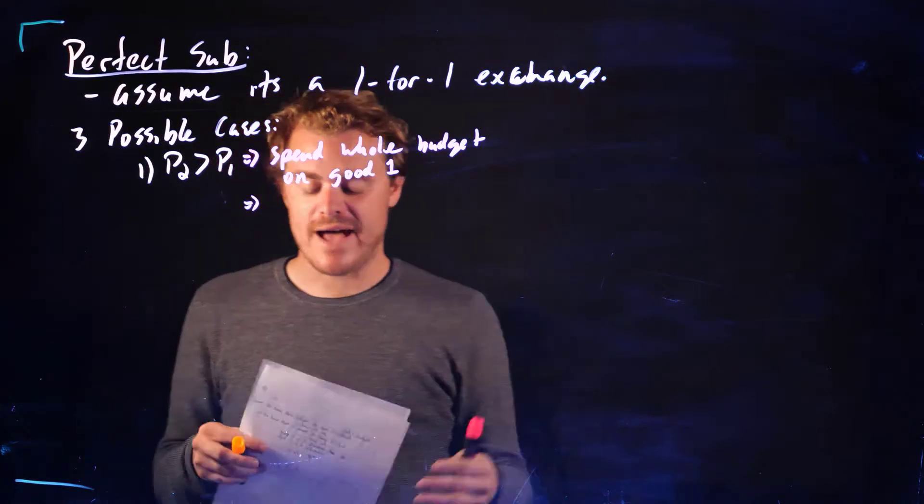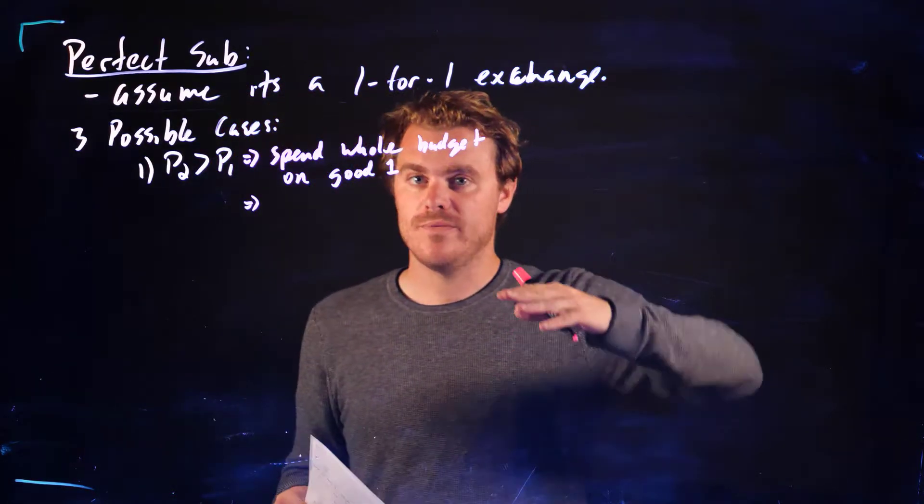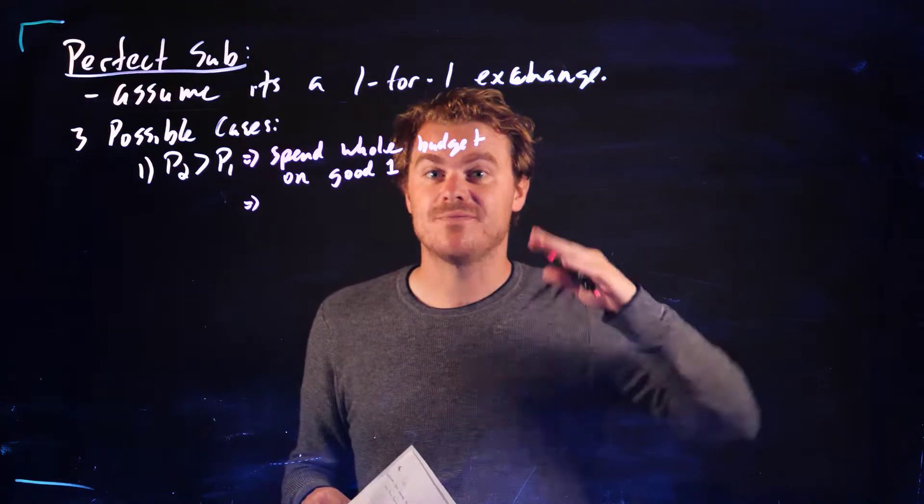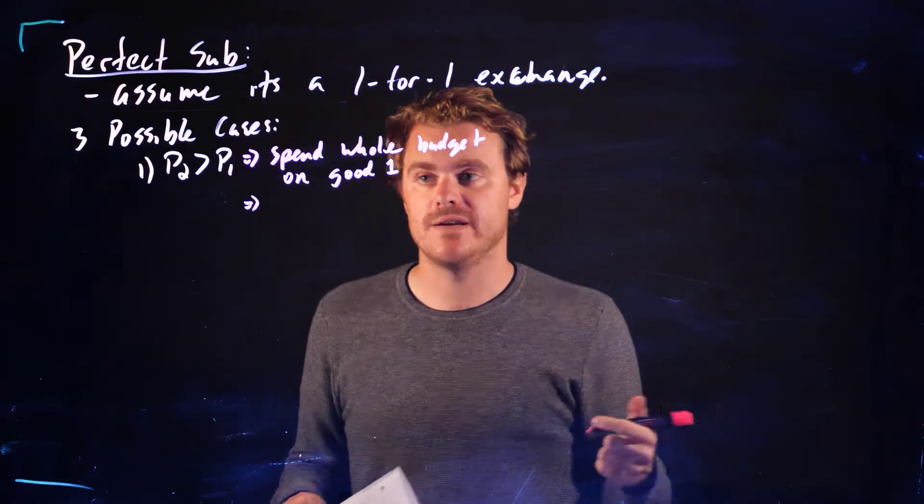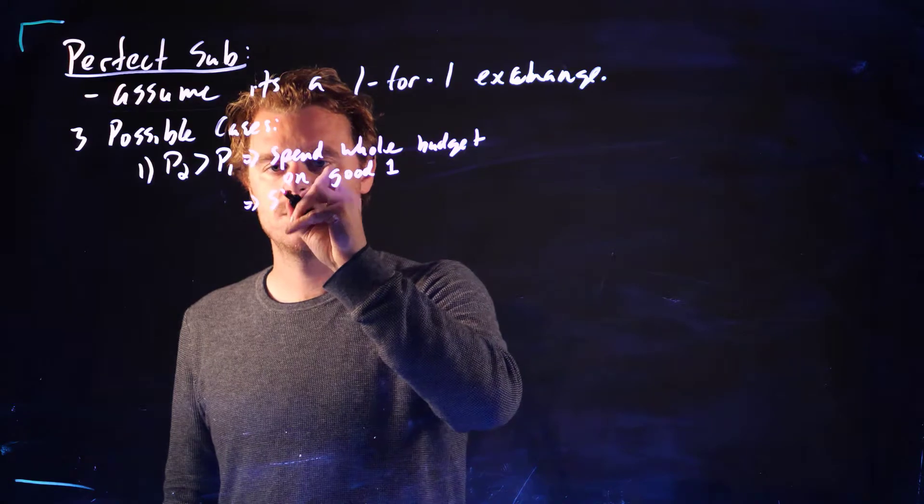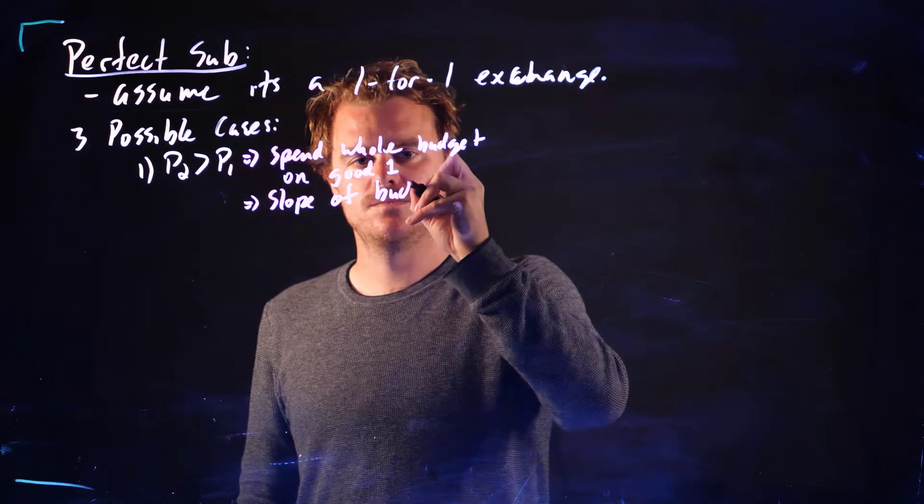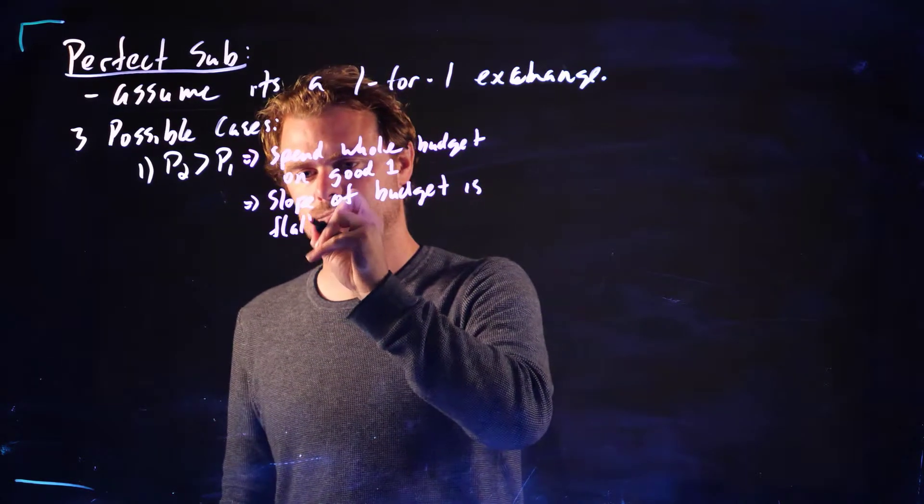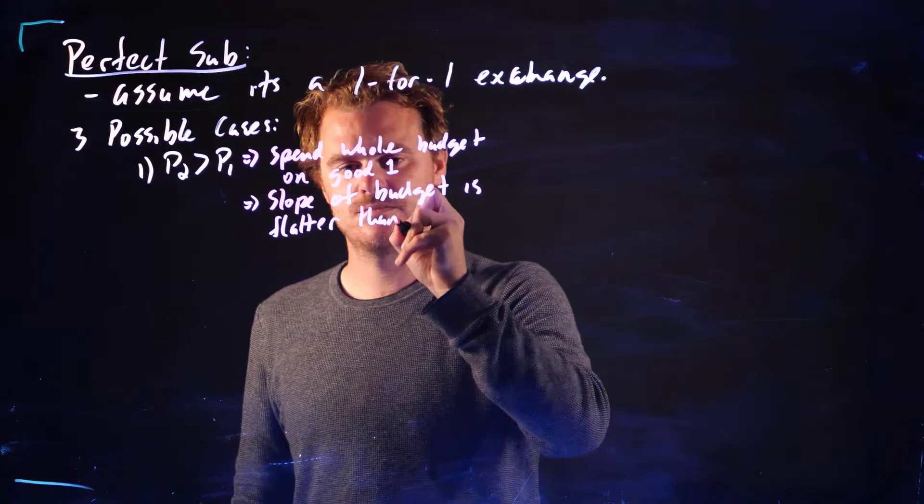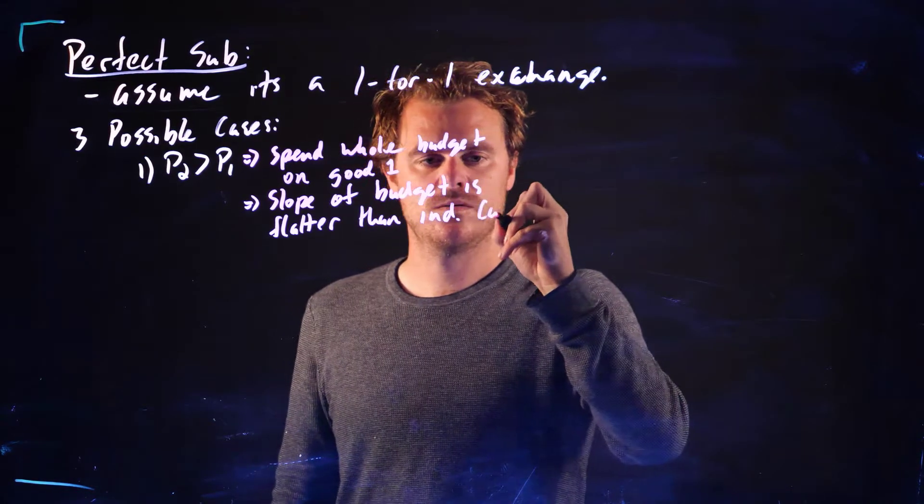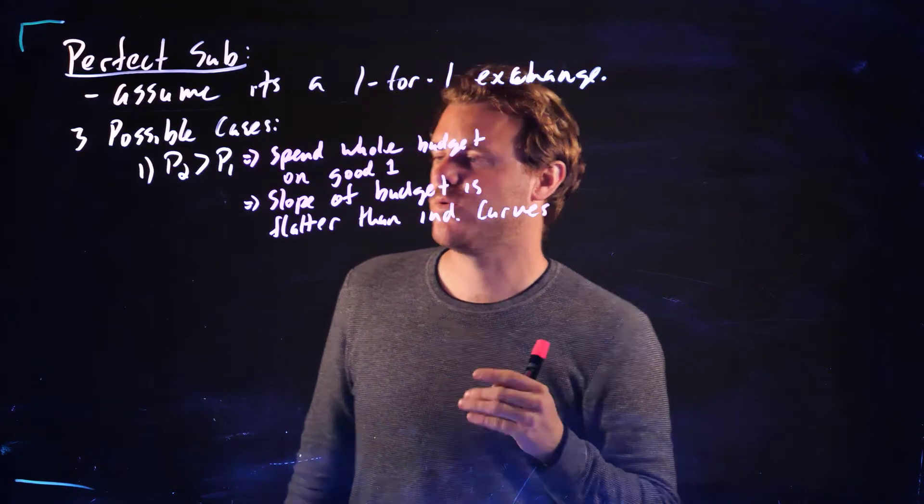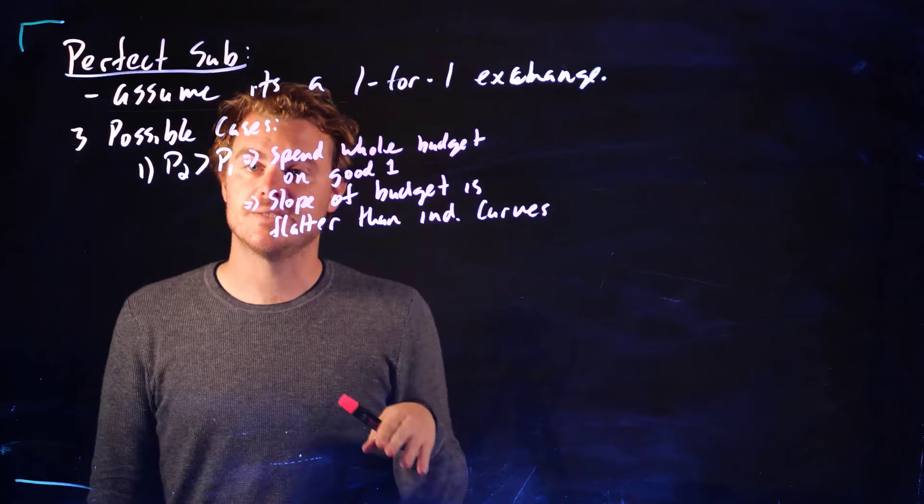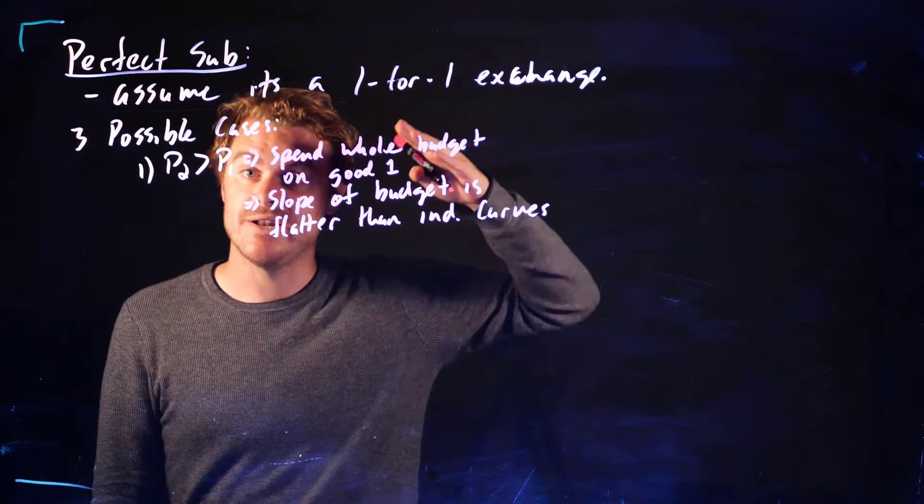And we like it just as much as good 2. And visually what's happening here is the slope of the budget constraint is flatter than the slope of the indifference curves.